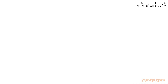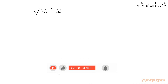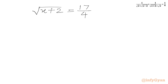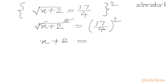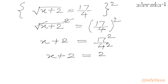So we can write square root (x plus 2) equals 17 over 4. Now we square both sides: square root (x plus 2) whole square equals (17 over 4) whole square. Cancelling square root with square on the left, we get x plus 2 equals 289 over 16, since 17 squared is 289 and 4 squared is 16.